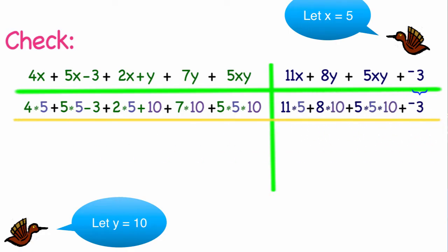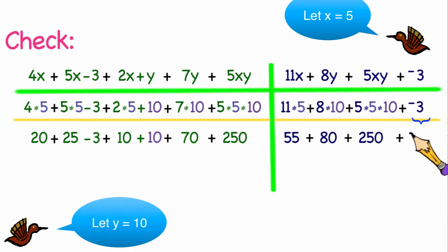After I've done that, I'm going to follow the order of operations, which says we need to do all the multiplication first. When we do that, we get 20 + 25 - 3 + 10 + 10 + 70 + 250 = 55 + 80 + 250 + (-3). Next we'll need to subtract and add from left to right. 20 + 25 is 45. Subtract 3, we get 42. Add 10, we get 52. Add 10 more, we get 62. Add 70, we get 132. Add 250, we get 382.